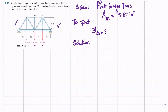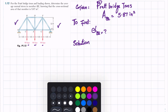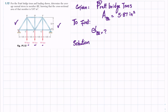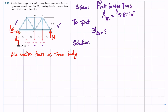From the figure, the Pratt bridge truss is supported at points A and H. We remove these supports and replace them with reaction forces. The reaction forces at point A are Ay and Ax, and the reaction at point H is H. We will use the entire truss as the free body diagram.